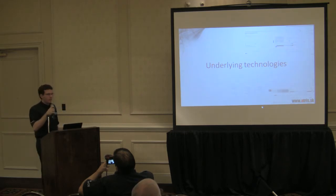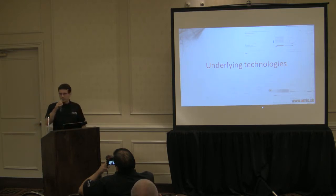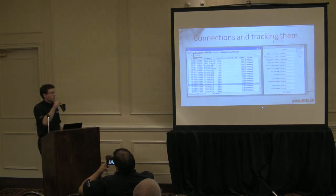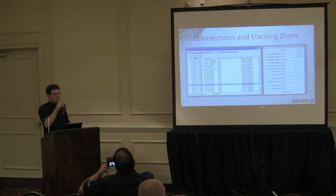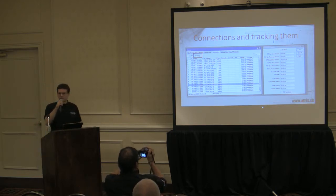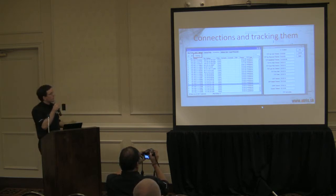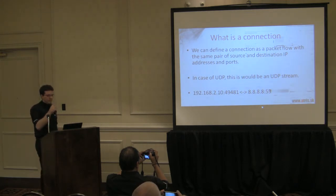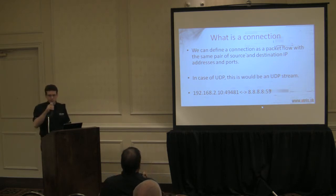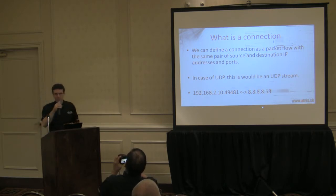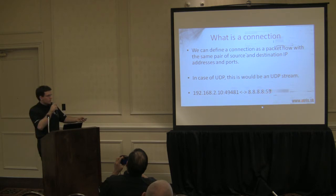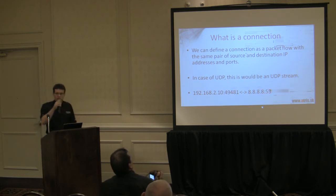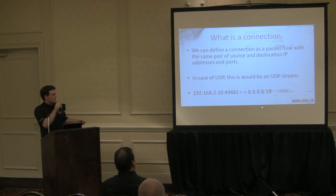Underlying technologies — this is just a quick review since Steve already covered the basics. Connections and tracking: this is how the connection table looks in RouterOS. It's important that you have connection tracking enabled — lots of people turn connection tracking off, but you have to have it enabled for mangle to work. A connection is a packet flow with the same pair of source and destination IP addresses and ports. UDP doesn't have connections, so it would be a UDP stream. All packets returning from the destination back to your computer on the same source port are considered part of this connection.